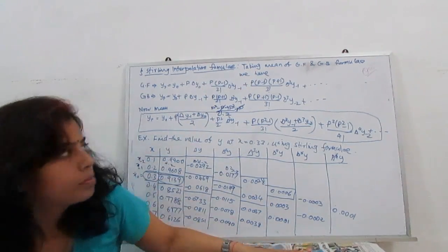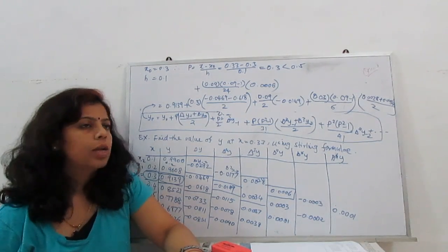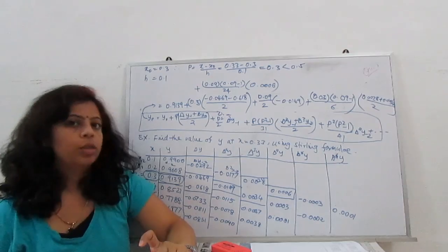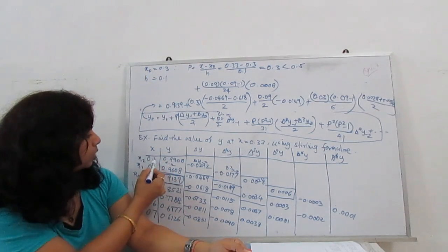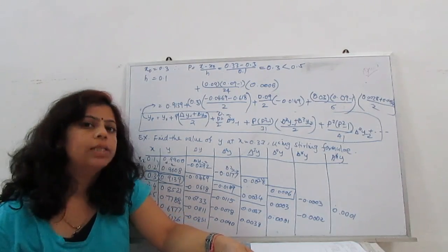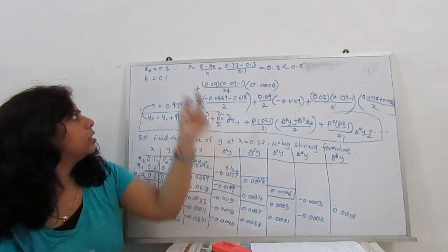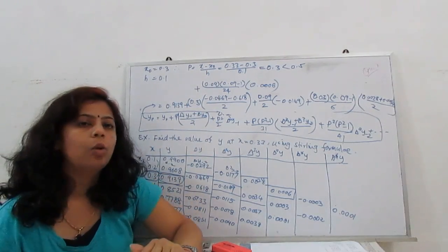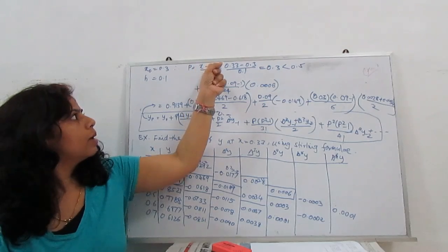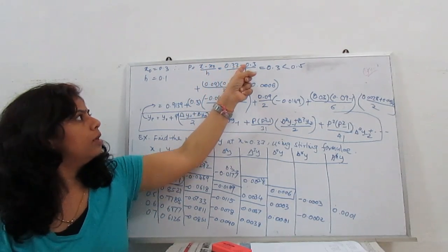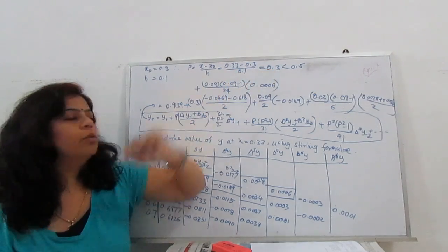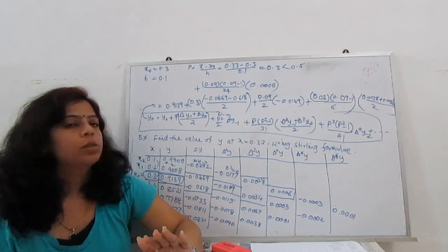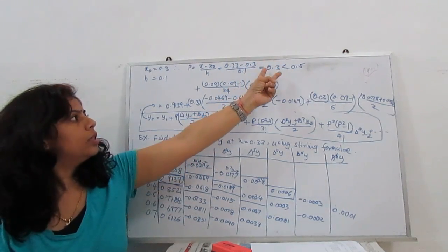To calculate p: p = (x - x0)/h, where h is the fixed interval. The interval h = 0.2 - 0.1 = 0.1. Our x0 = 0.3 and we want x = 0.33. So p = (0.33 - 0.3)/0.1 = 0.3. Since p = 0.3, which is less than 0.5, we confirm our choice of x0 is appropriate.